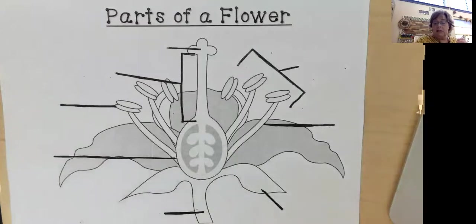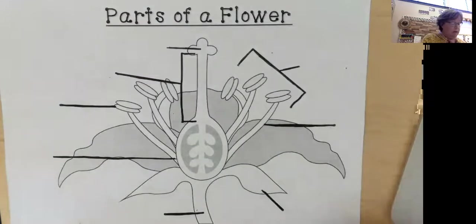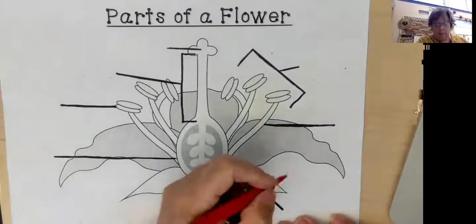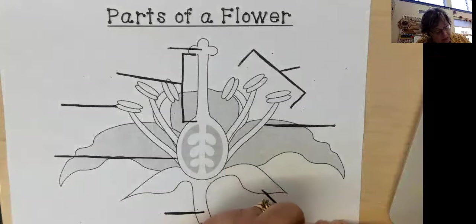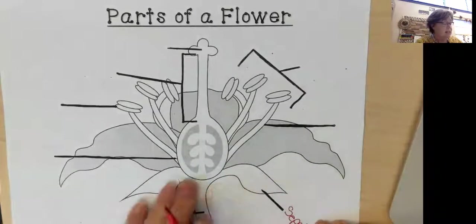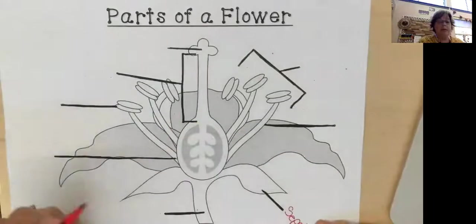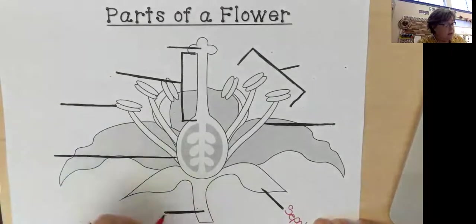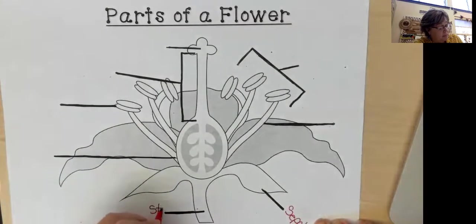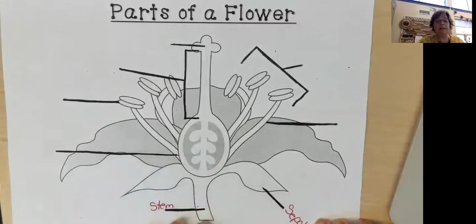So let's begin with down at the bottom. Remember we have that sepal and that is this part that protects everything that kind of holds it, holds the actual flower all together. And this would be the stem. The stem and the sepal.